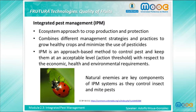What is Integrated Pest Management? According to the Food and Agriculture Organization of the United Nations, Integrated Pest Management is an ecosystem approach to crop production and protection that combines different management strategies and practices to grow healthy crops and minimize the use of pesticides. IPM is an approach based on method analysis of the agro-ecosystem and the management of its different elements to control pests and keep them at an acceptable level — the action threshold — with respect to economic, health and environmental requirements.